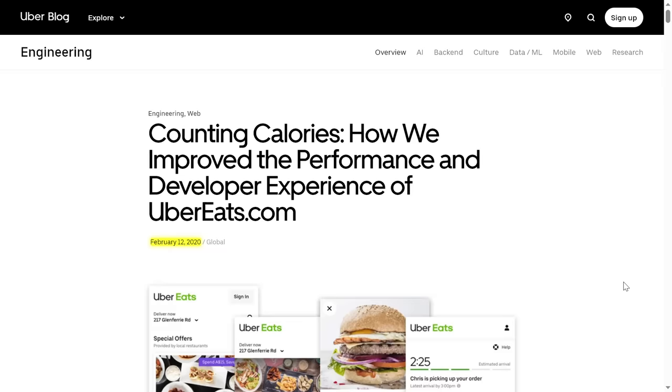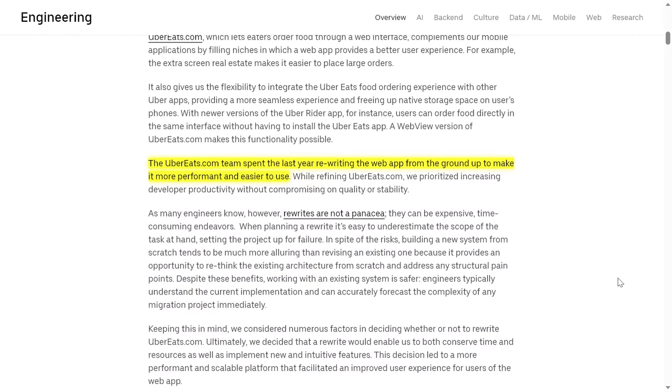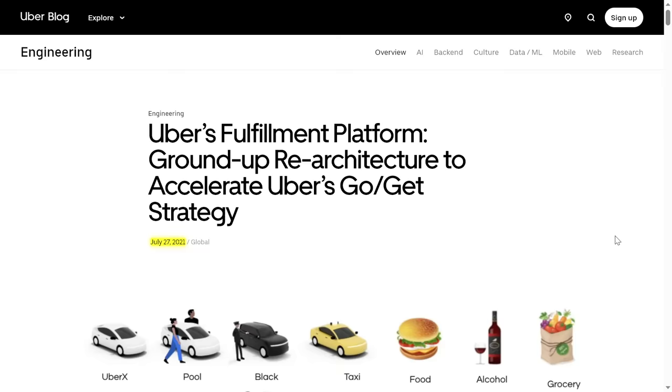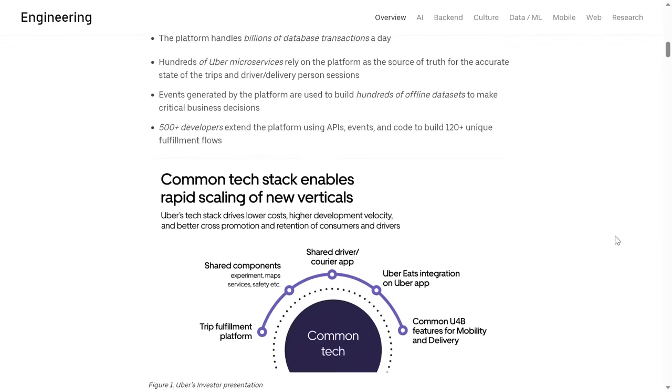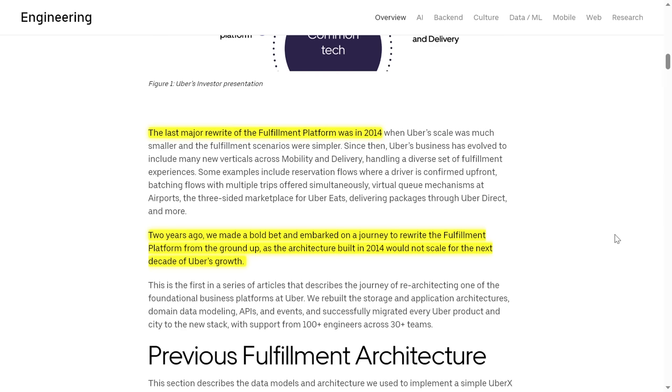In 2020, Uber announced they were rewriting their Uber Eats app from the ground up in a complete rewrite that took an entire year. Why was a complete rewrite necessary? They only gave two reasons, and one of them was performance. In 2021, Uber announced another complete rewrite, this time of their fulfillment platform. This process took two years and was necessary because, according to Uber, quote, the architecture built in 2014 would not scale.